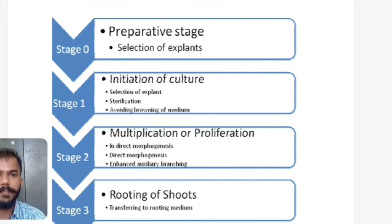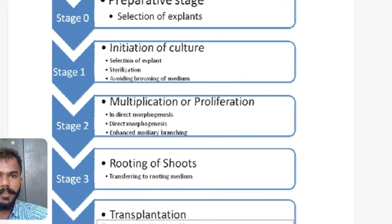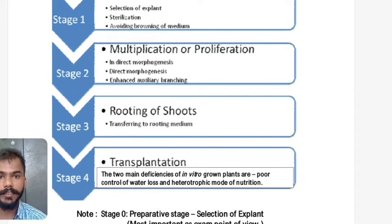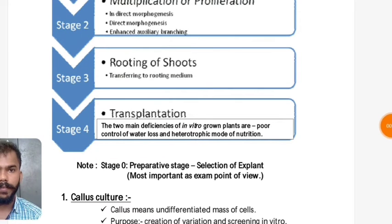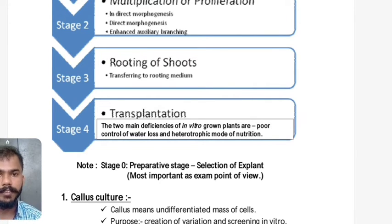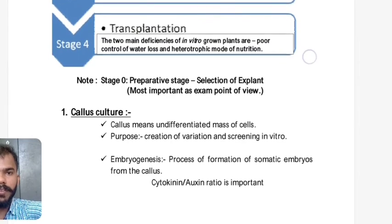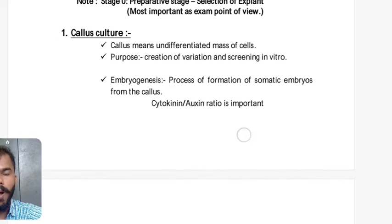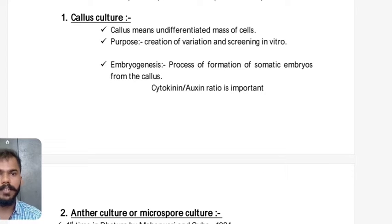The stages in plant tissue culture: Stage 0 is the preparative stage — selection of explant (most important from exam point of view). Stage 1 is initiation of culture — sterilization of the explant and avoiding browning of the media. Stage 2 is multiplication or proliferation. Stage 3 is rooting of the shoots. Stage 4 is the final stage — transplantation of the rooted plantlets.